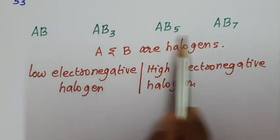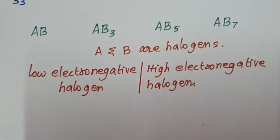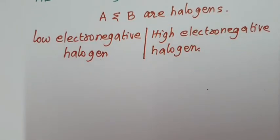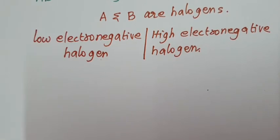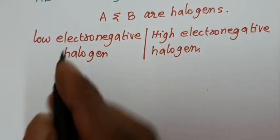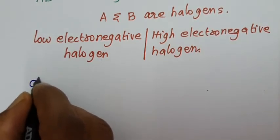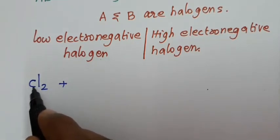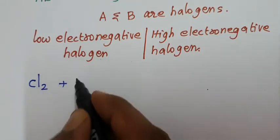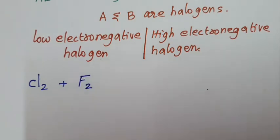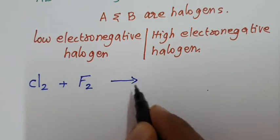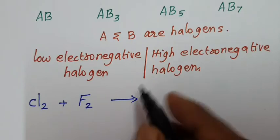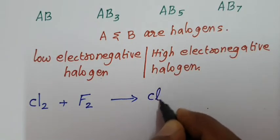In this molecular formula, interhalogen compounds are formed. You can select any two halogens, but they must differ in their electronegativity value. For example, if your first halogen is Cl2 (chlorine, electronegativity ~3.8), it combines with the high electronegative halogen fluorine. For the AB type, that gives ClF — fluorine valency 1, chlorine valency 1.